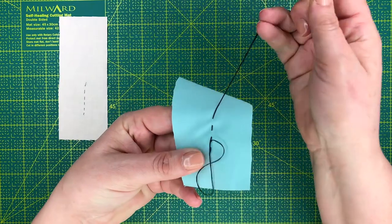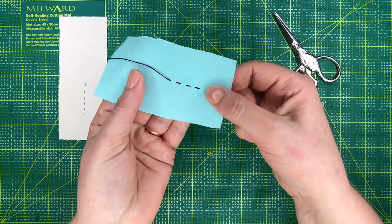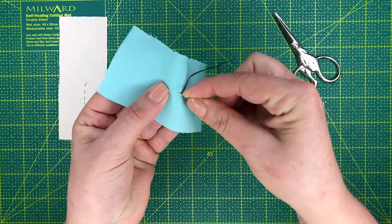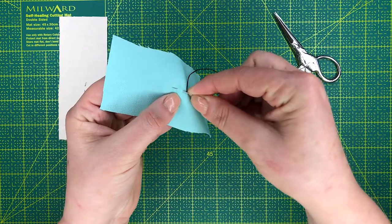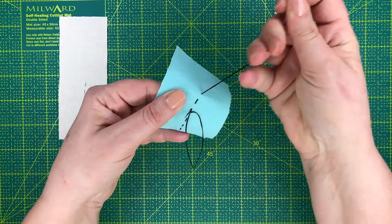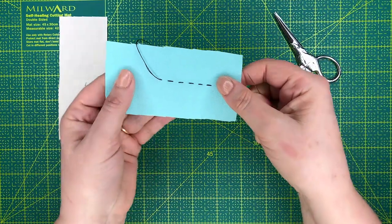is pull the thread all the way through, and that will create your running stitch. I'll do that again very quickly. So you just poke it through, gathering a few sections of fabric at a time, and pull it through. Okay, and that is basically how you do a running stitch.